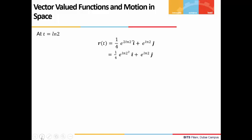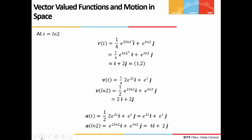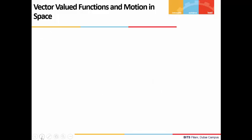At t = ln 2, the position vector r(t) is i + 2j. This we got by substituting t = ln 2, and this will be the first step. Then we find velocity v(t) by differentiating r(t), and when we substitute t = ln 2, we get v(ln 2) = 2i + 2j. When we differentiate the velocity vector v(t), we get the acceleration vector, and on substituting t = ln 2, we get a(ln 2) = 4i + 2j.